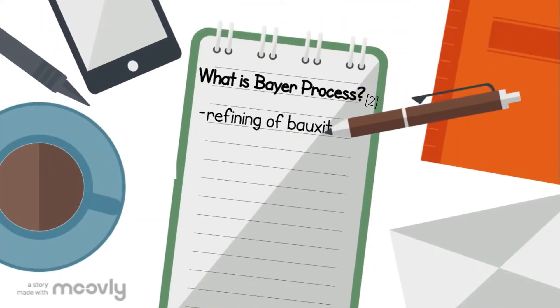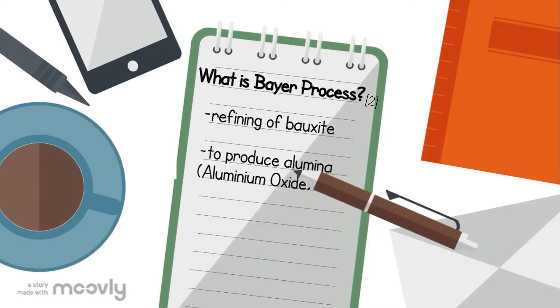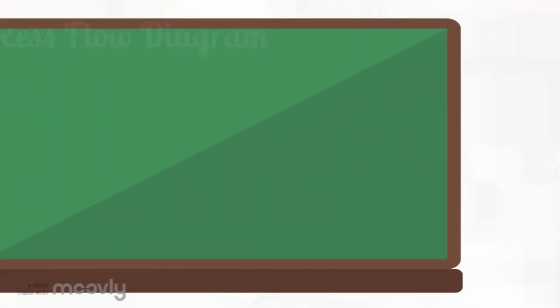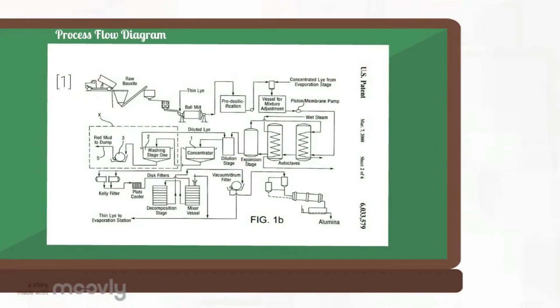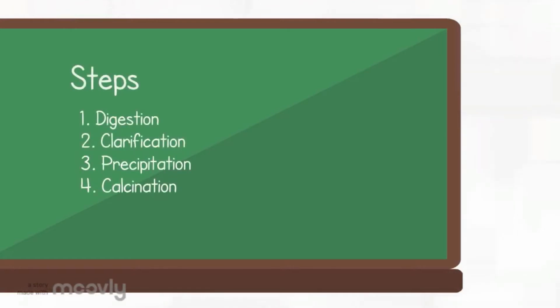What is bioprocess? Bioprocess is a refining process that produces alumina by extracting bauxite. Let's have a look at the process flow diagram. Bioprocess is made up of four chemical processes, which include digestion, clarification, precipitation, and calcination.